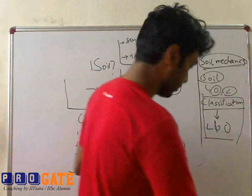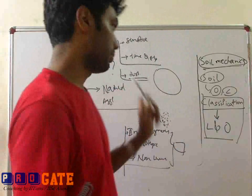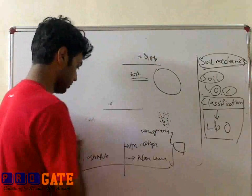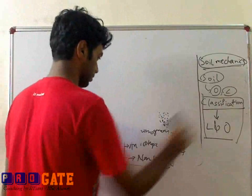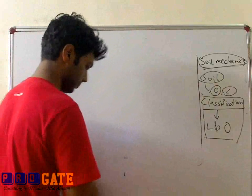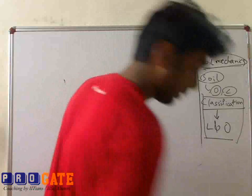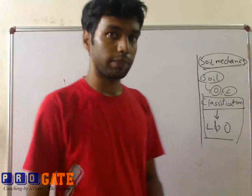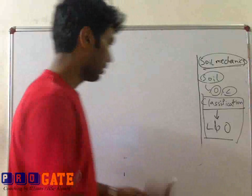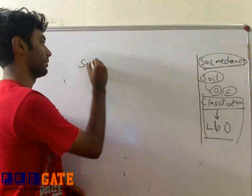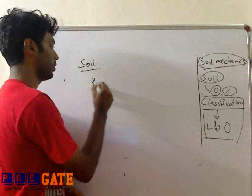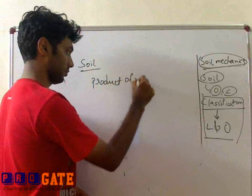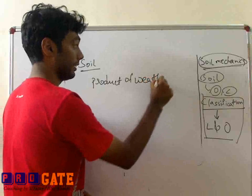Now that we know this, let us get into how soil originates and how to actually source it. Soil is basically a product of weathering — it is a product of weathering of rocks.